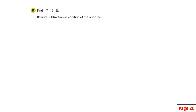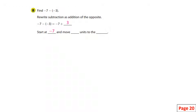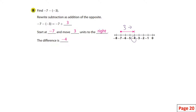Negative seven minus negative three. You rewrite it as adding the opposite: this changes to addition and the opposite of negative three is positive three. So negative seven minus negative three is the same thing as negative seven plus three. You start at negative seven and move three units to the right, ending up on negative four. The difference is negative four.